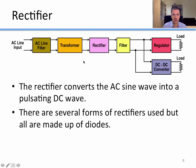After the transformer, we use a rectifier. A rectifier is used to convert that AC output from the transformer into a pulsating but almost constant DC output. There are several forms of rectifiers used, but they're almost all made up of diodes.